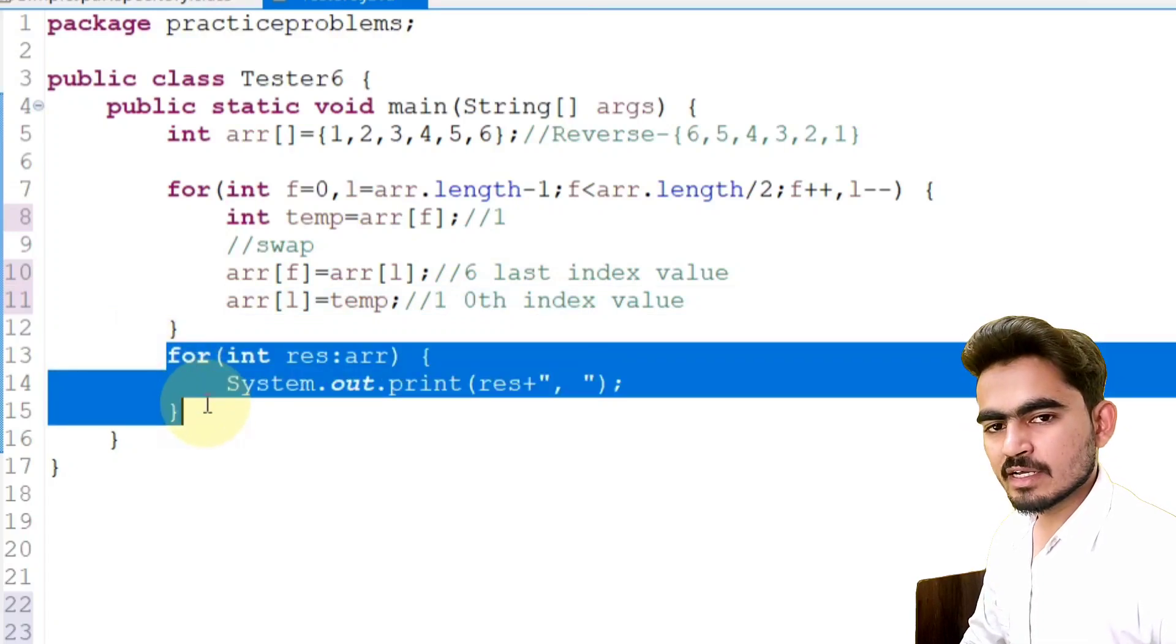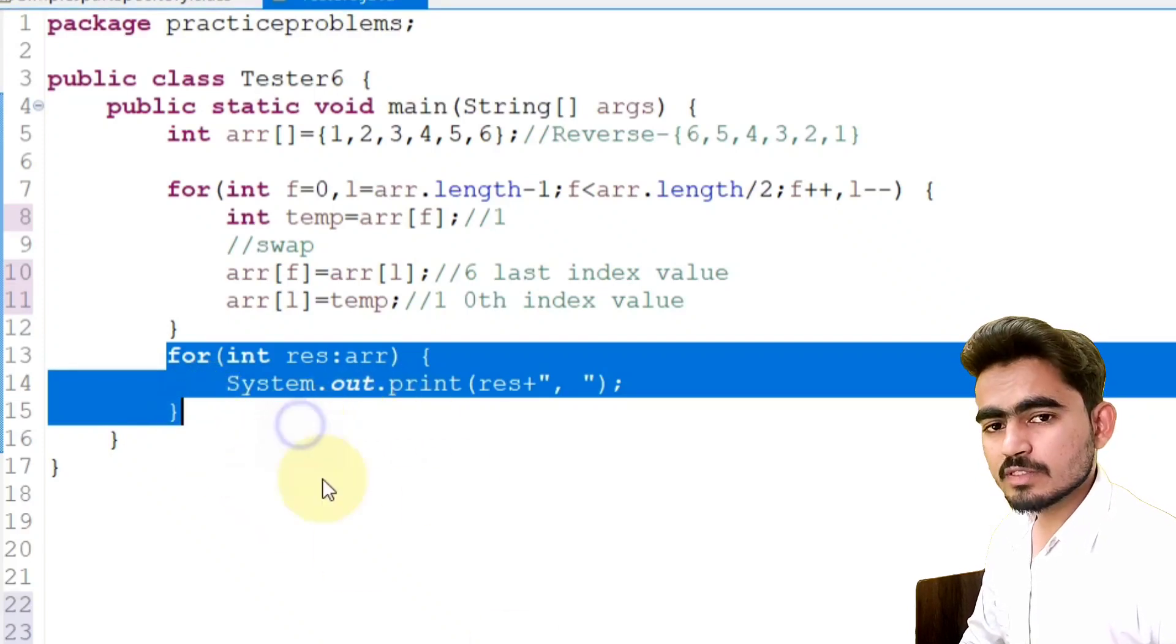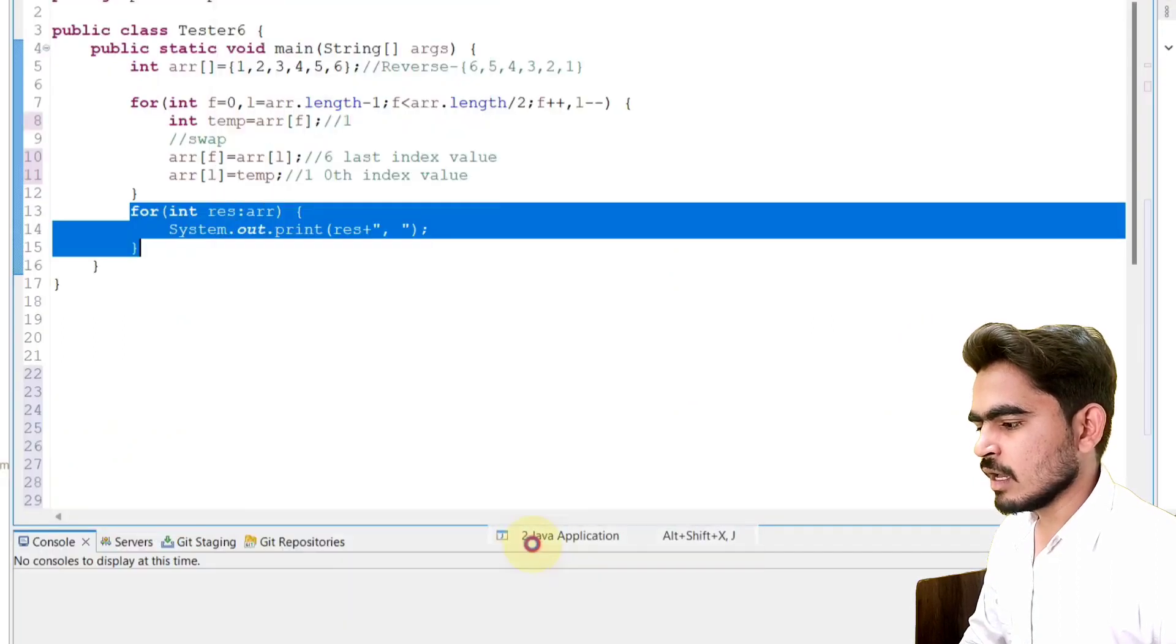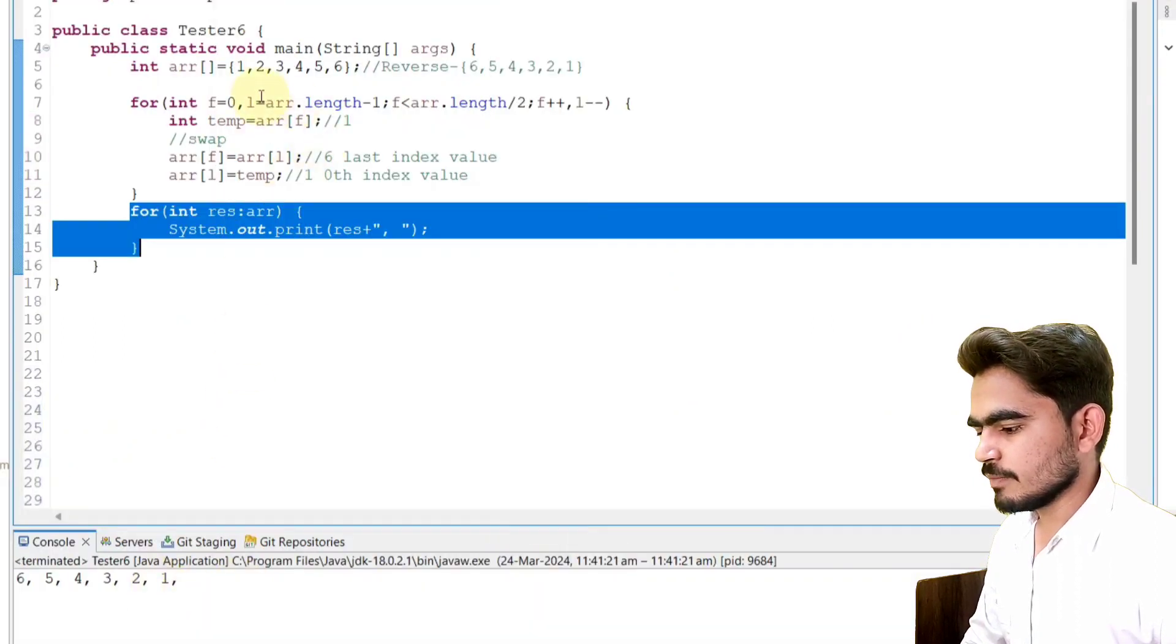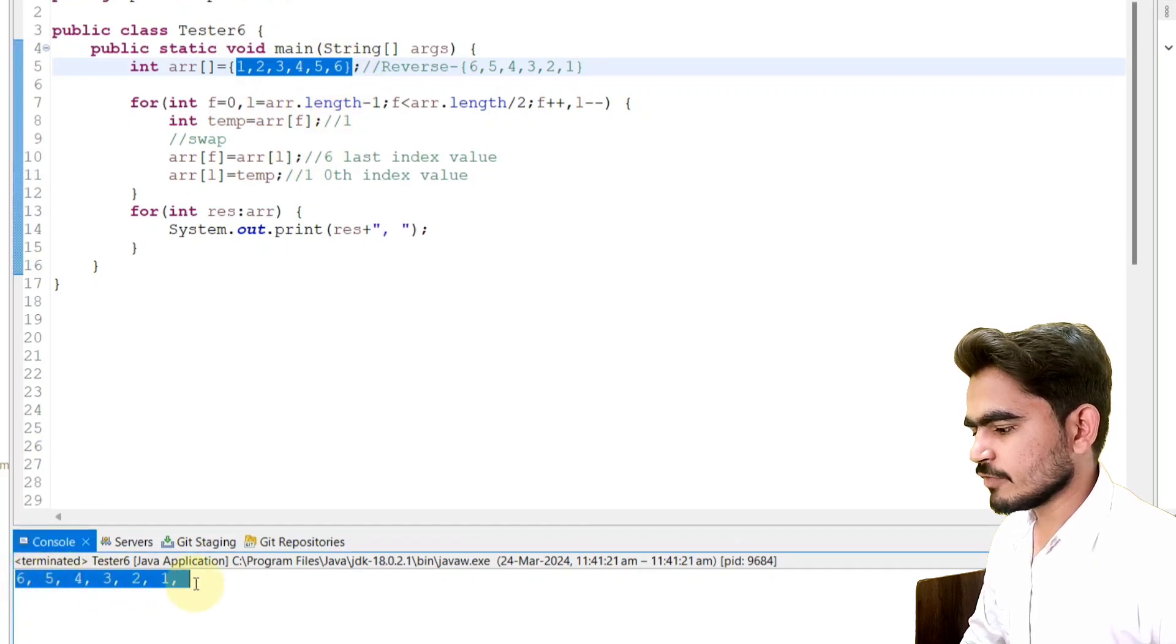Finally, we will get our resultant array. To confirm whether our array is reversed or not, I wrote this for loop. The purpose of this for loop is just printing array as it is. After executing this program, I got array.